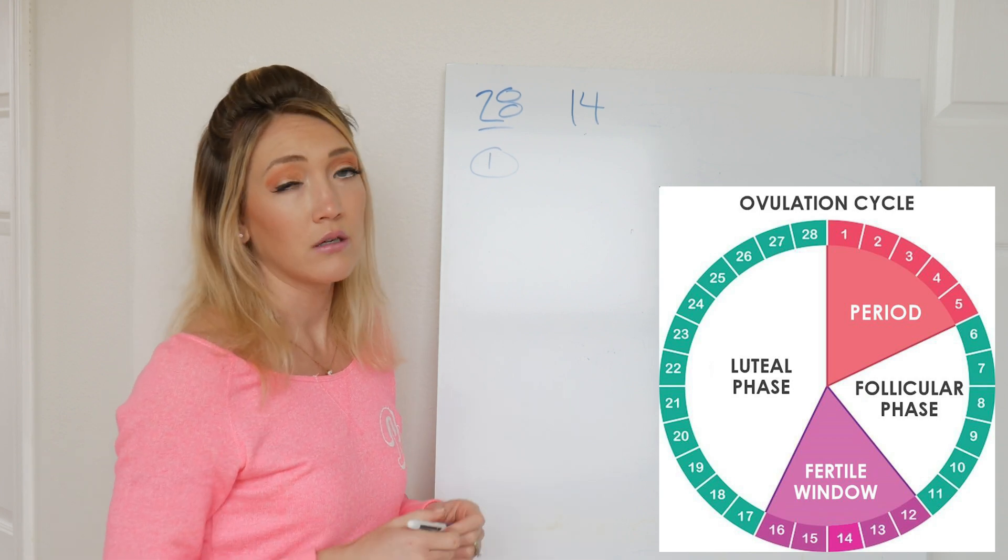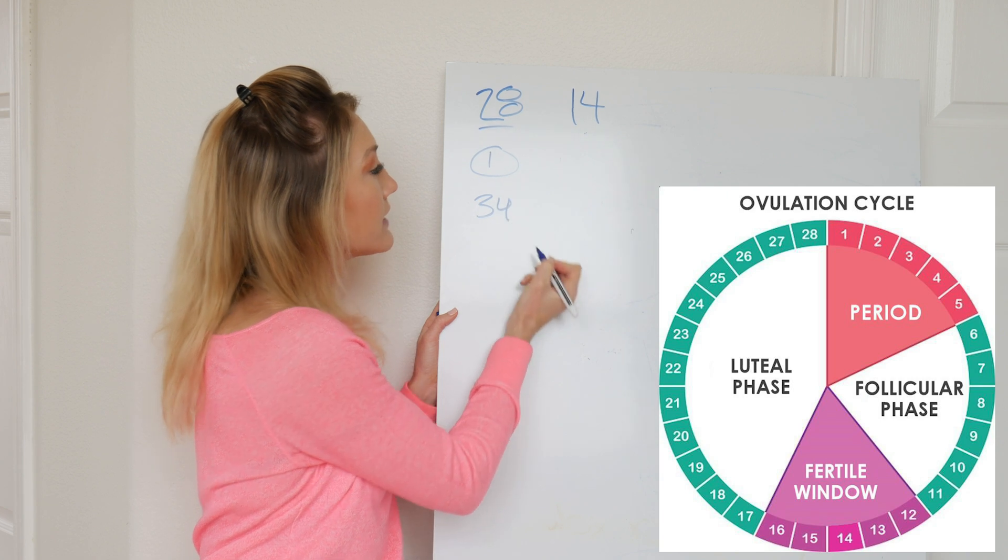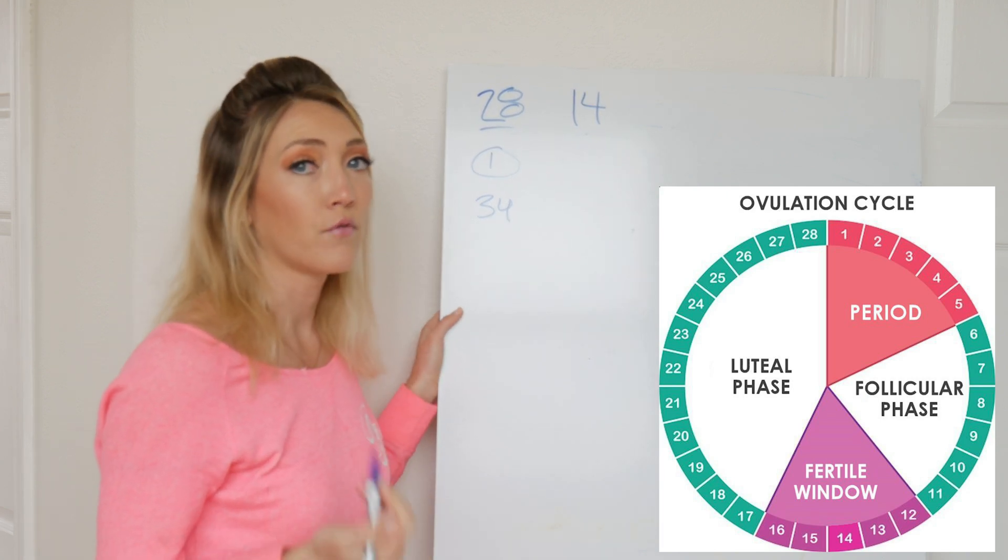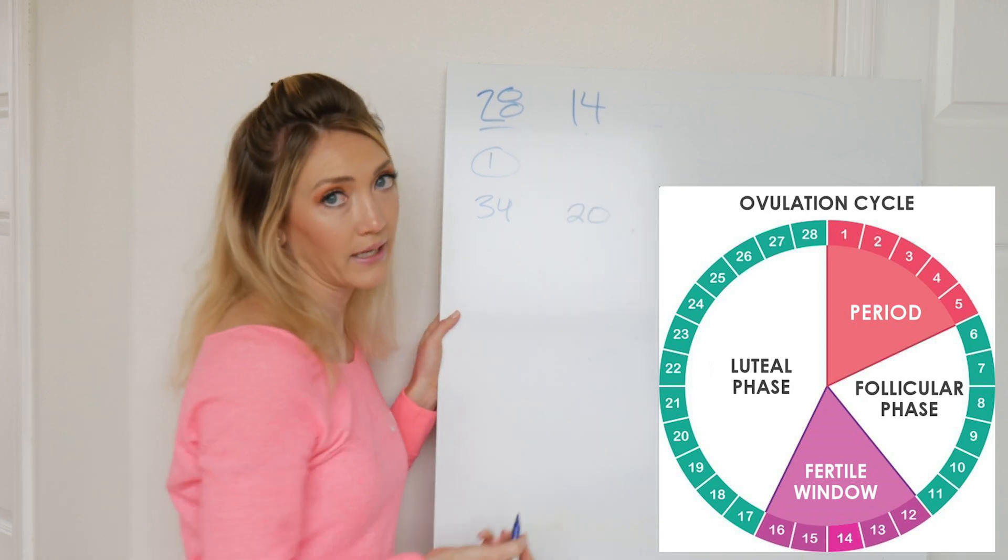Now, if you have a really long cycle, you can work backwards. So, say you had a 34-day cycle, you're going to ovulate about 14 days before your next period, so you'd be ovulating on day 20 of your cycle.